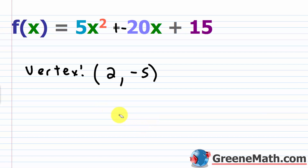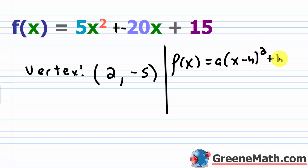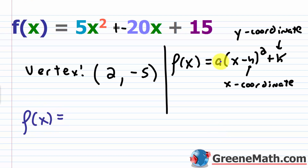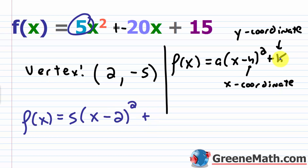To write this in vertex form, match f(x) = a(x − h)² + k. Here a = 5, h = 2 (the x coordinate of the vertex), and k = −5 (the y coordinate). So the vertex form is f(x) = 5(x − 2)² − 5.